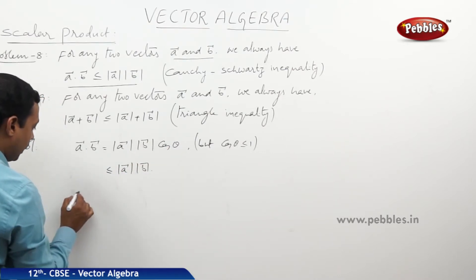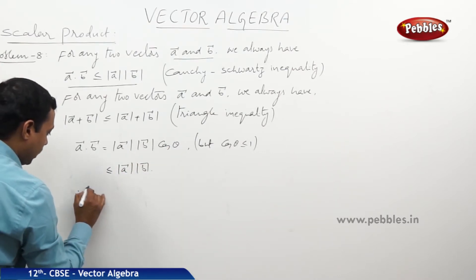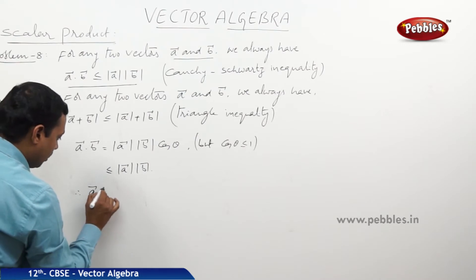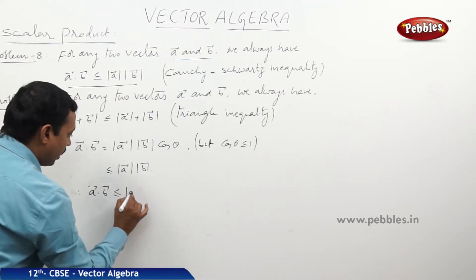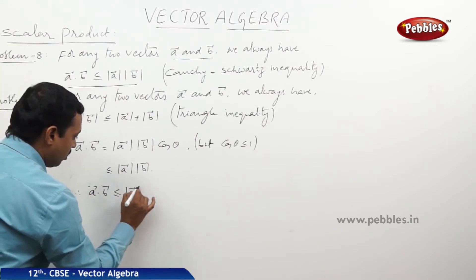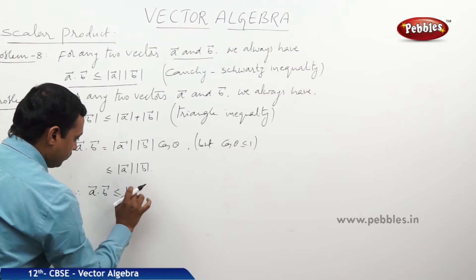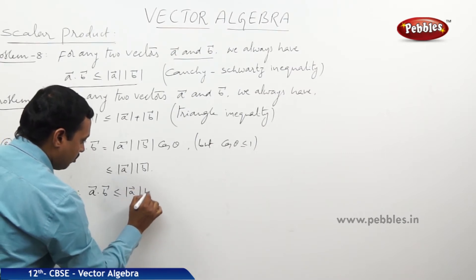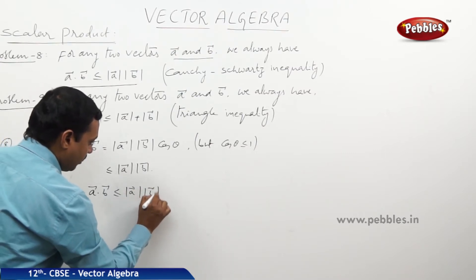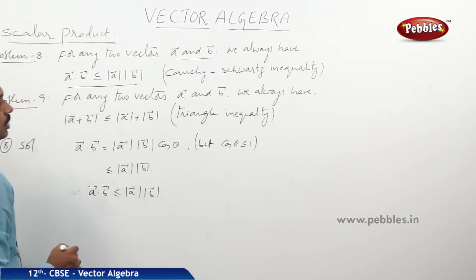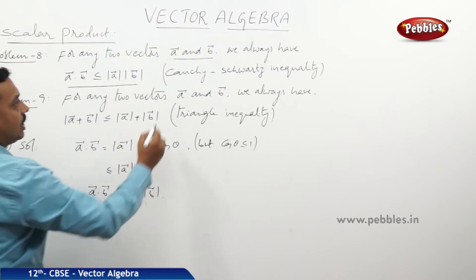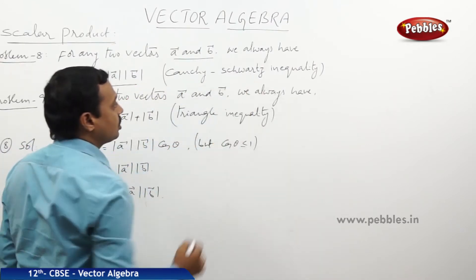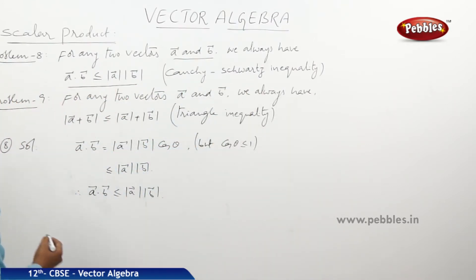Therefore, finally, a·b is always less than or equal to |a||b| — the modulus of vector a times the modulus of vector b. This is the first inequality, known as the Cauchy-Schwarz inequality.